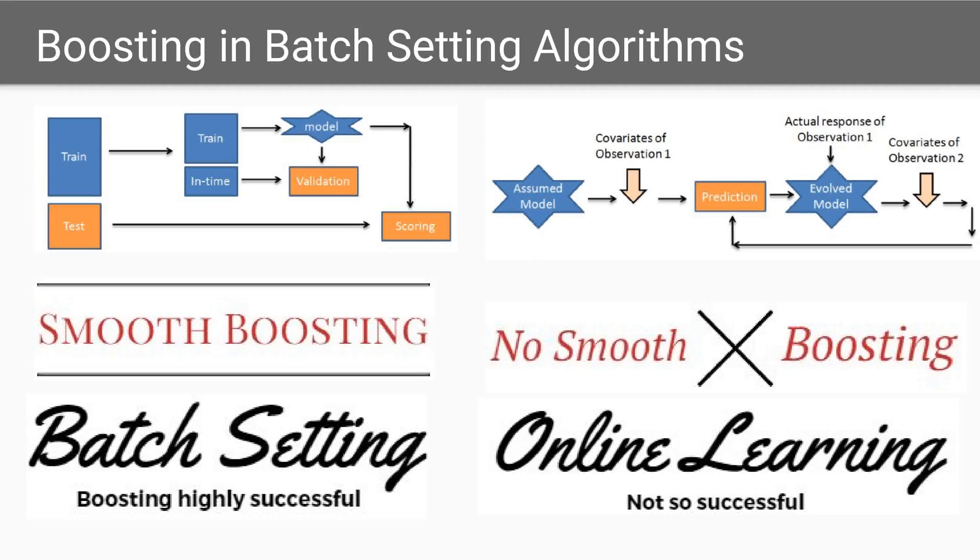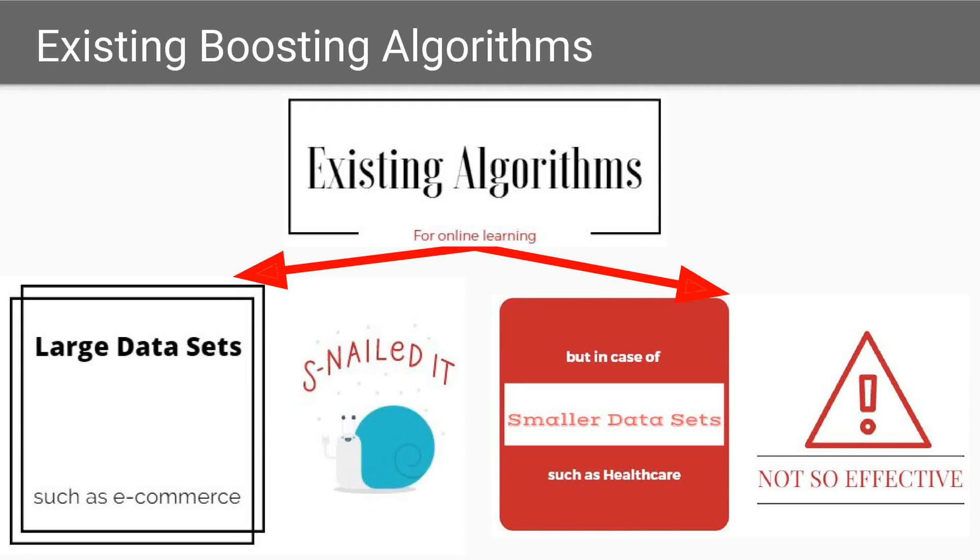Online boosting has been highly susceptible. The limitation of the proposed algorithms is that they give better performance with larger data sets. This can create hindrance of its applicability in a generalized way. For instance, in the health sector, there is not much data to analyze as compared to the e-commerce domain.